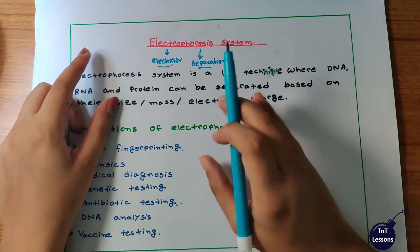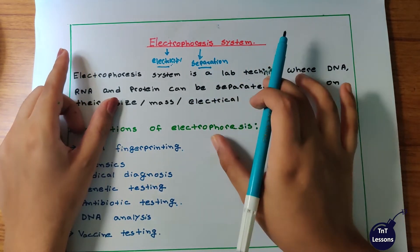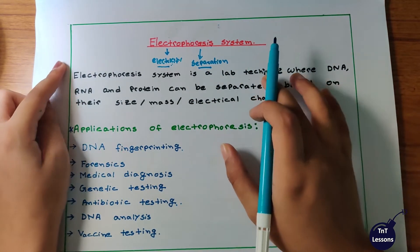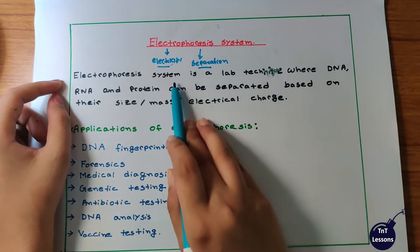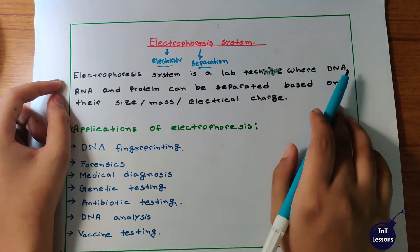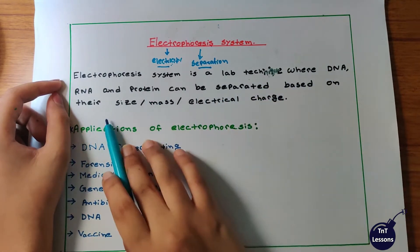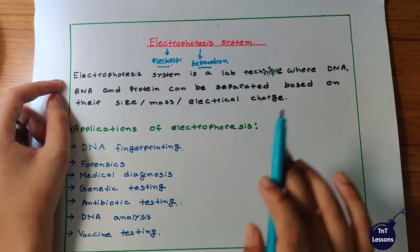The charged biomolecules are DNA, RNA, and protein. Electrophoresis system is a lab technique where DNA, RNA, and protein can be separated based on their size, mass, and electrical charge.